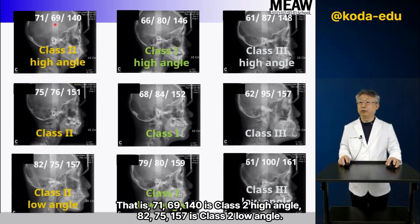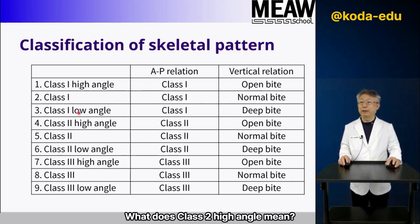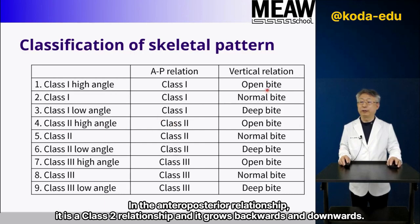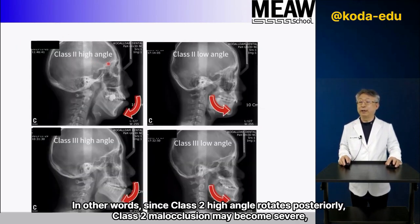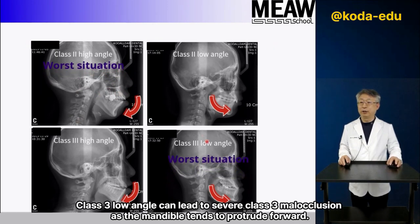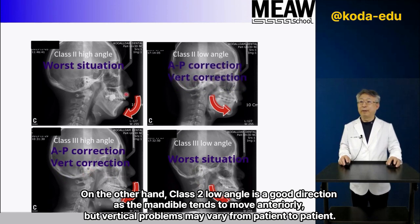For example, ODI 71, APDI 69, CF 140 is class II high angle; ODI 82, APDI 75, CF 157 is class II low angle. Class II high angle means a class II relationship in the anteroposterior that grows backwards and downwards. Class II low angle shows a tendency of deep bite. Class II high angle rotates posteriorly, so class II malocclusion may become severe. Class III low angle can lead to severe class III malocclusion as the mandible tends to protrude forward. On the other hand, class II low angle is a favorable direction as the mandible tends to move anteriorly, though vertical problems may vary from patient to patient.